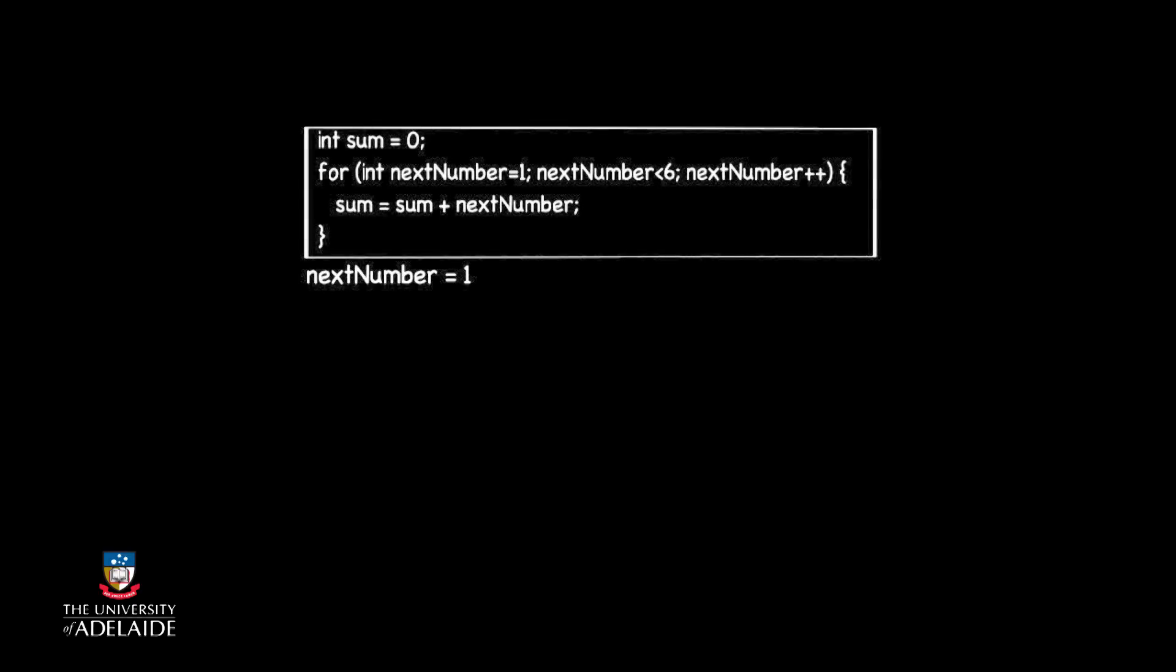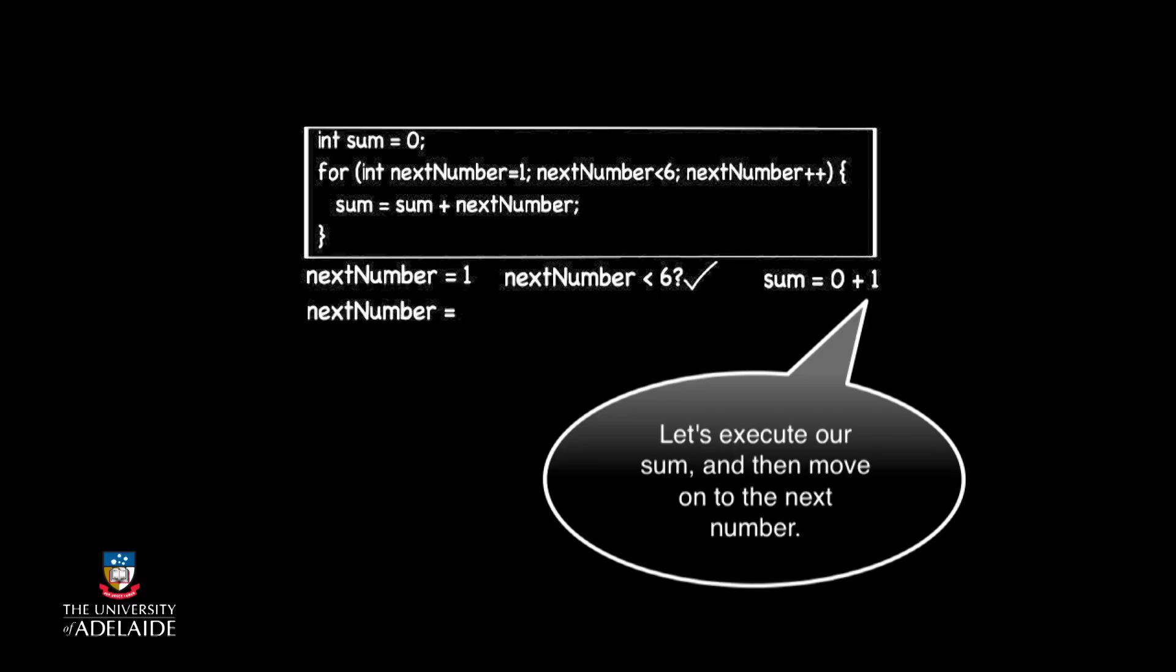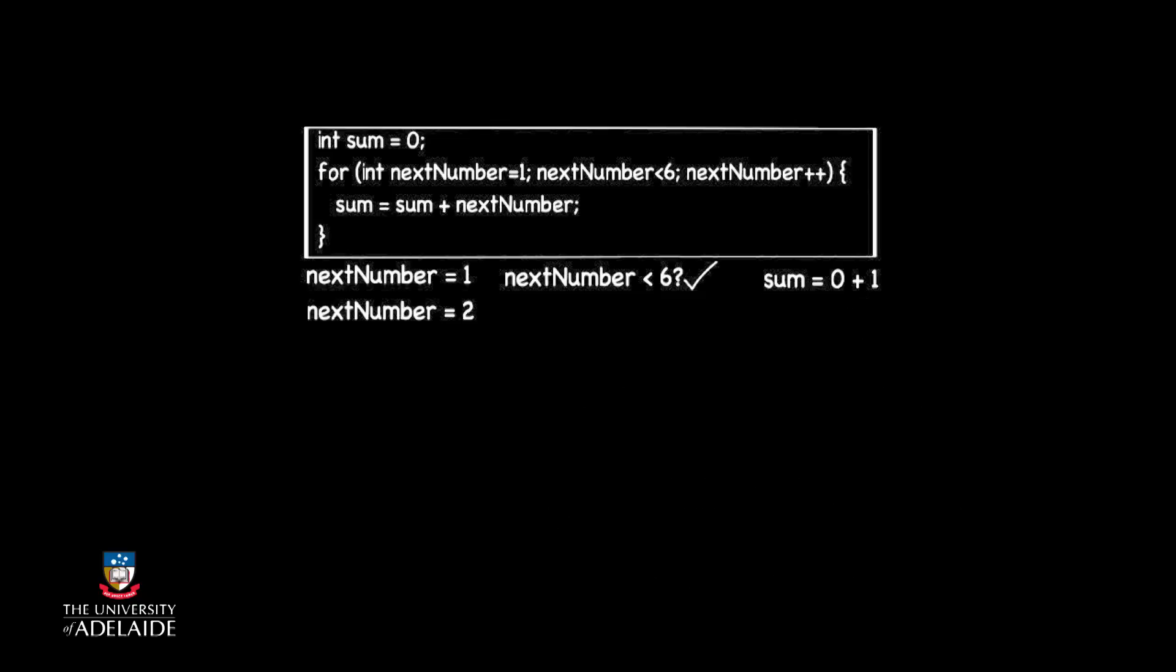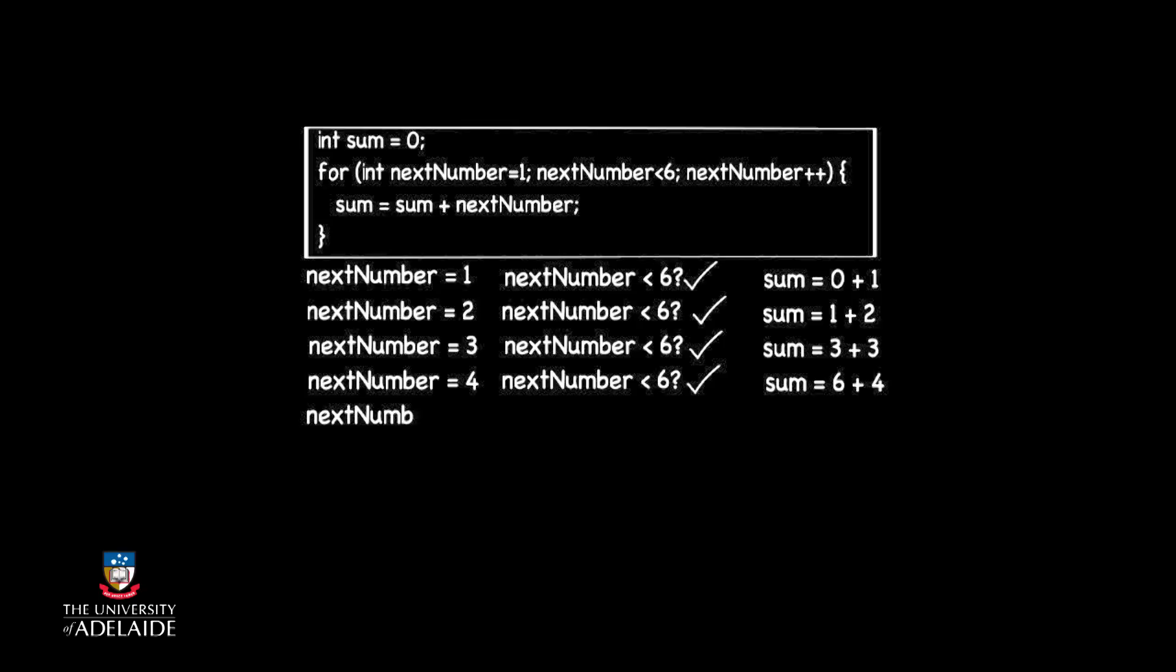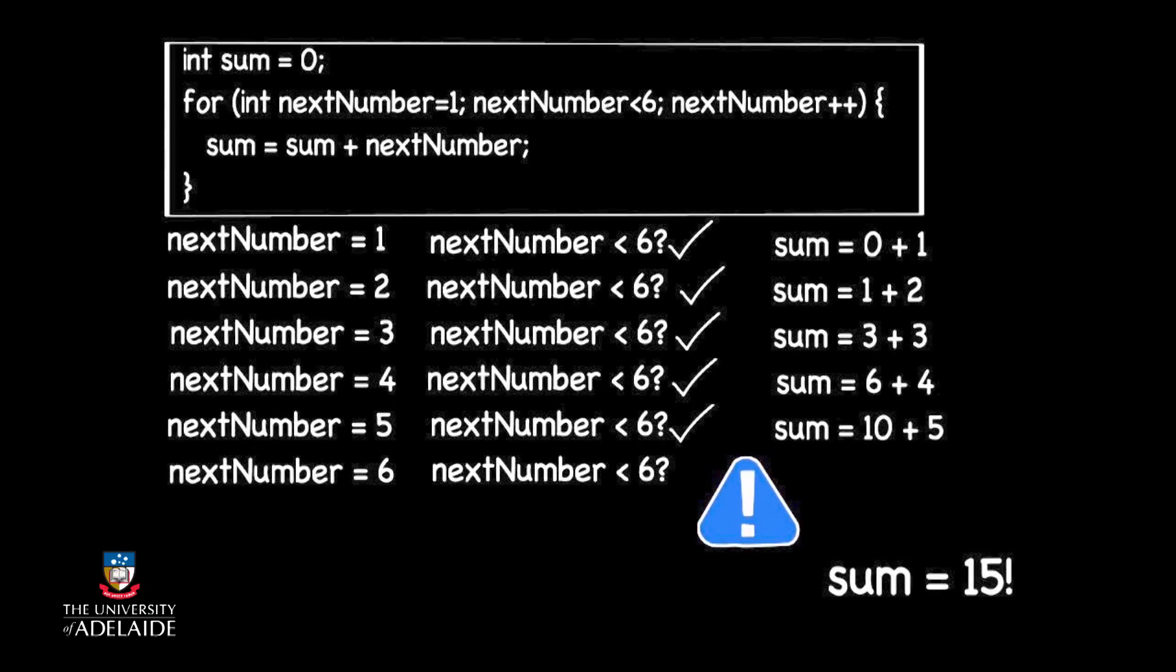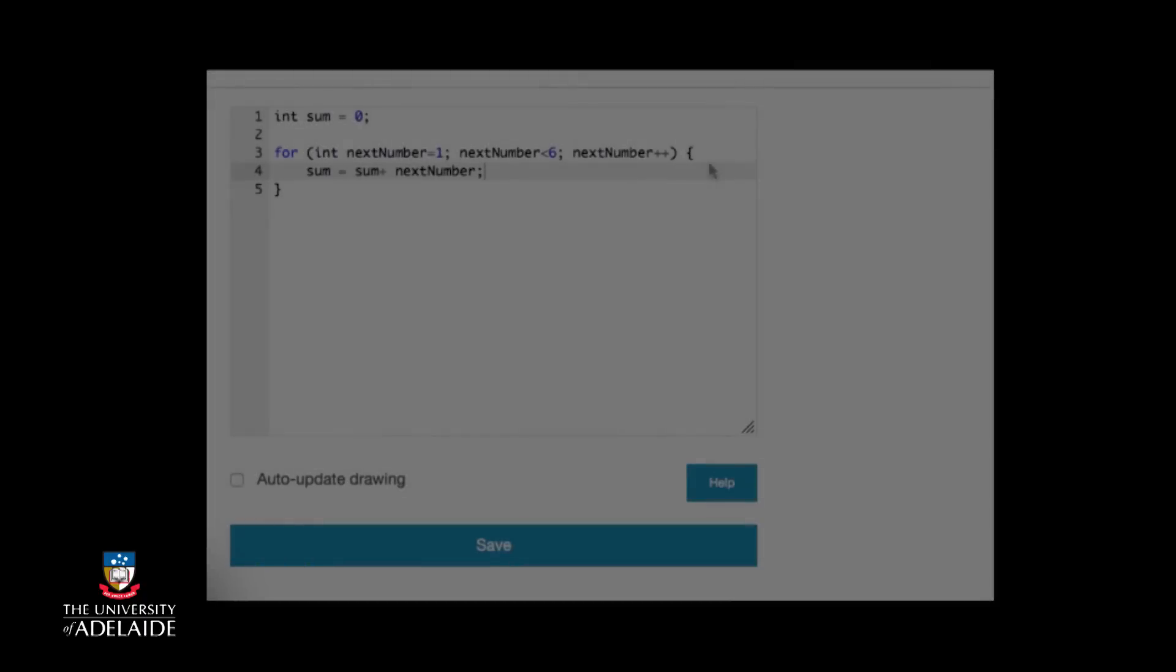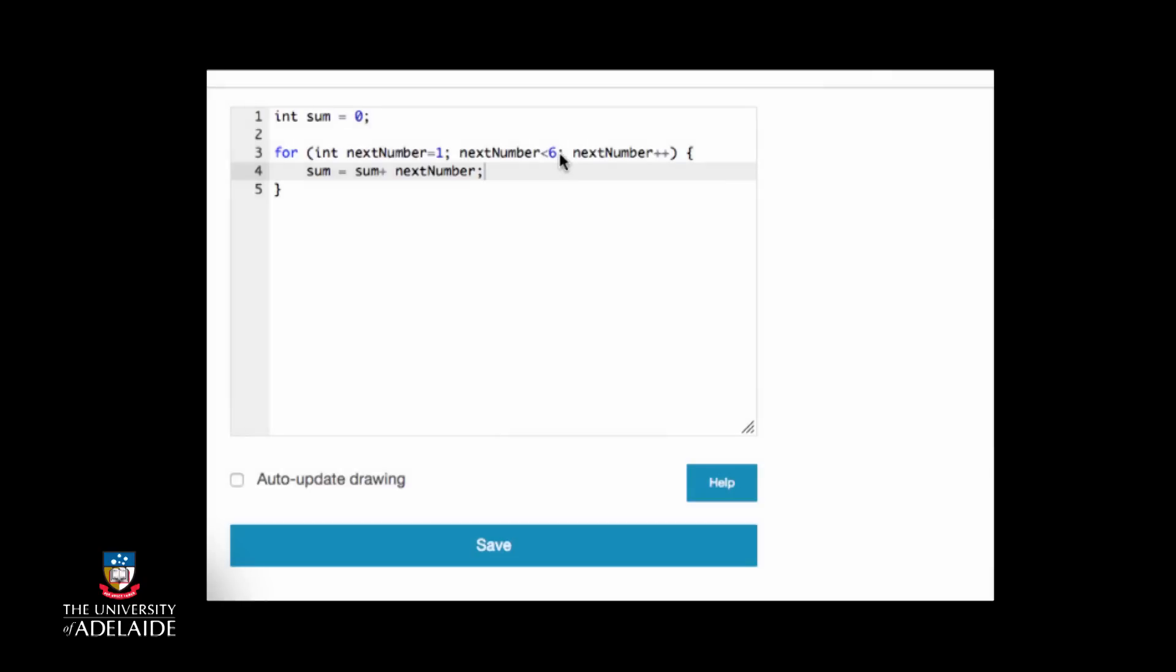Let's have a look at what happens when we execute this code. Let's think about the changes we explored earlier in changing our flowchart. What if we wanted to change the number sequence to 1 through to 10? We could change the value 5 to 11 in our condition, like so.